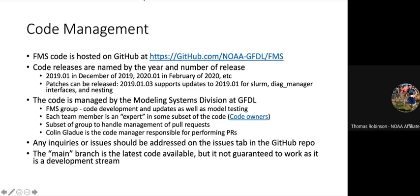Code releases use the first four digits for the year, the next two for the release number, and the next two for a minor release number. So 2019-01 was released in December of 2019. We've been patching — we have a 2019.01.03 — and we are working on releasing a 2020.03 soon.